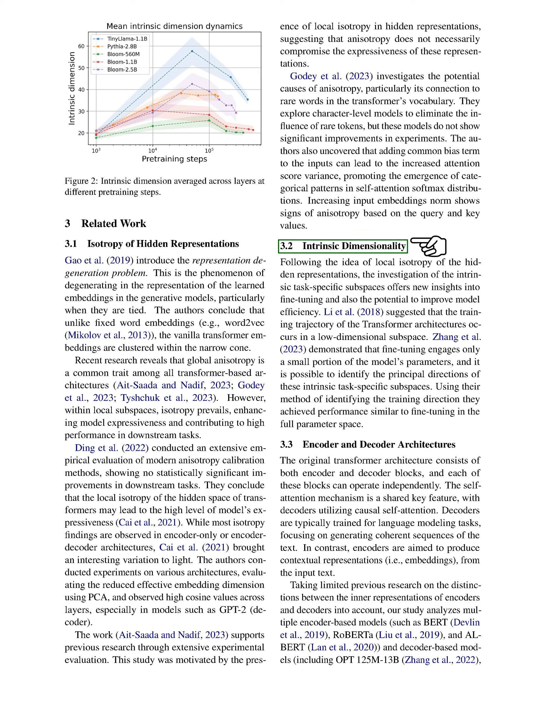Next, let's discuss the intrinsic dimensionality of these representations. We've found that the training trajectory of transformer architectures occurs in a low-dimensional subspace. This means that fine-tuning only uses a small portion of the model's parameters, and we can identify the main directions of these task-specific subspaces. Using this method, we've achieved performance similar to fine-tuning in the full-parameter space.